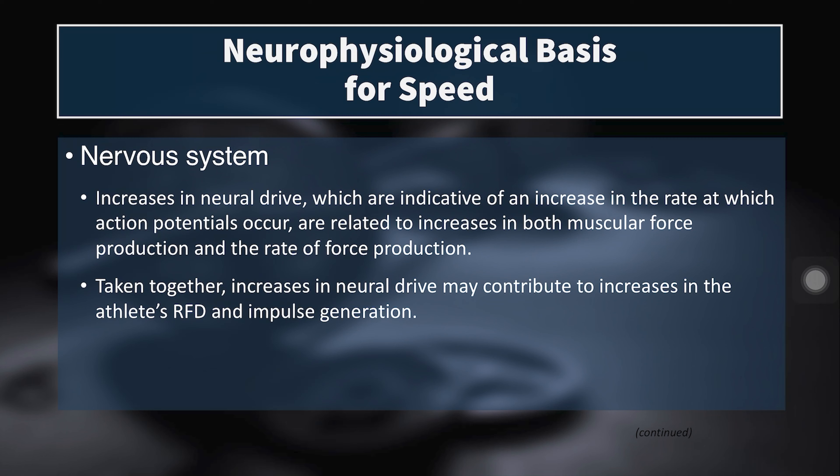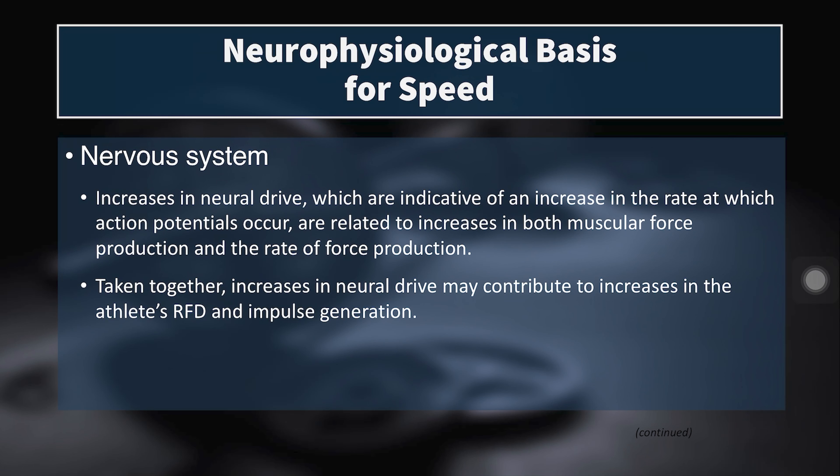So far we've been talking about the kinetics of sprinting — forces, impulse, and rate of force development — but we also have to talk about the neurophysiological basis for speed. Increases in neural drive, indicative of an increase in the rate of action potentials sent from the brain through the spinal cord and alpha motor neurons to high-threshold motor units, are related to increases in both muscular force and the rate of force production. So higher neural drive means higher peak force and higher RFD.